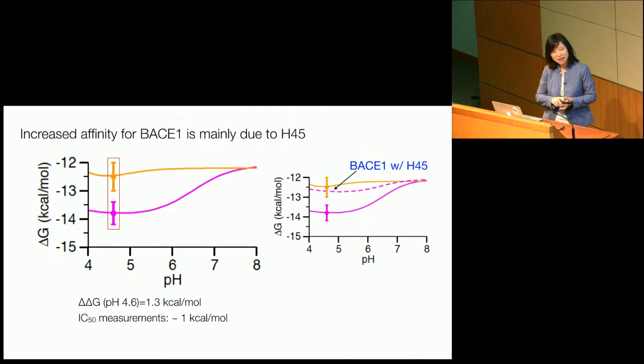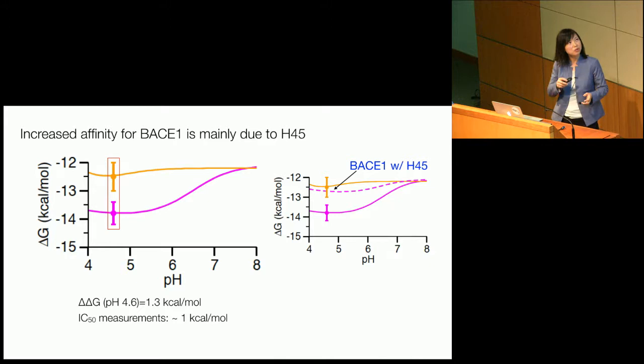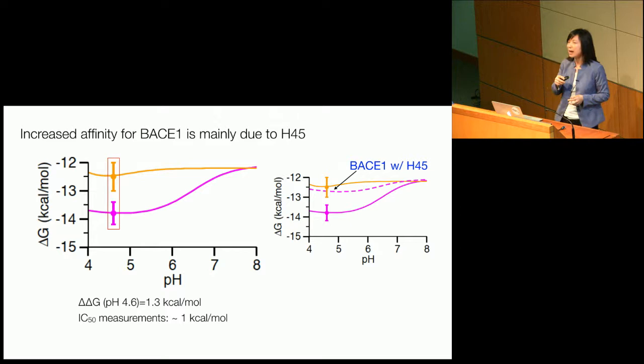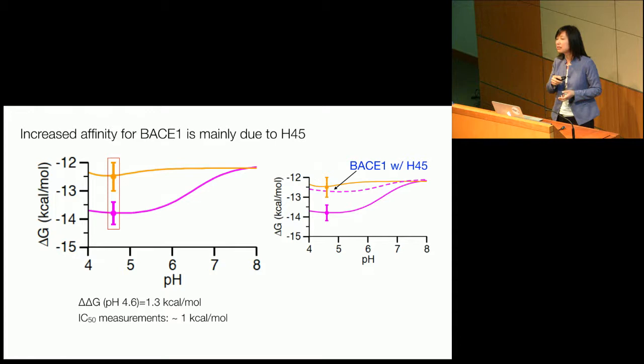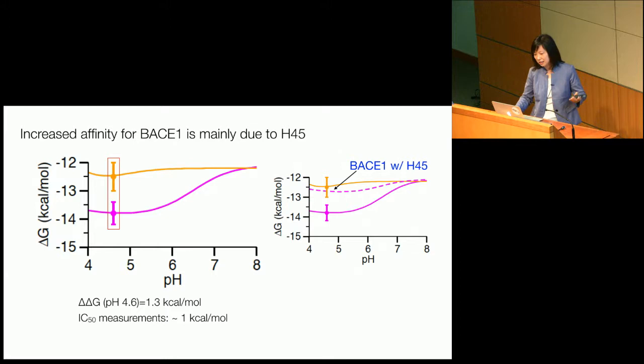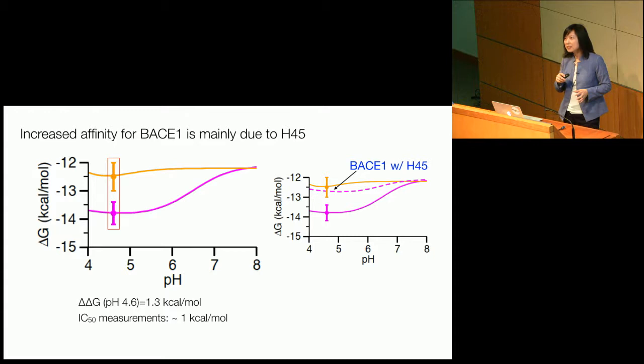So what determines the total free energy pH dependence? For catepsin D, because of the cancellation between positive and negative contributions, we end up with a very flat curve — there is literally no pH dependence. For BACE1, however, we have a stabilizing contribution from histidine, which brings the free energy down. The difference at the experimentally measured IC50 pH value is about 1.3 kcal/mol, comparing fairly well to the experimental value. This could be incidental — it's a proof-of-concept study — but it provides very interesting insight.